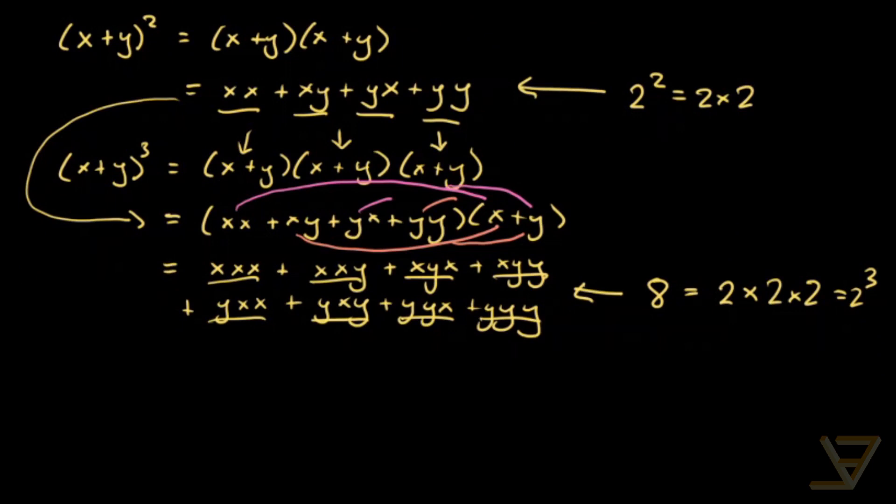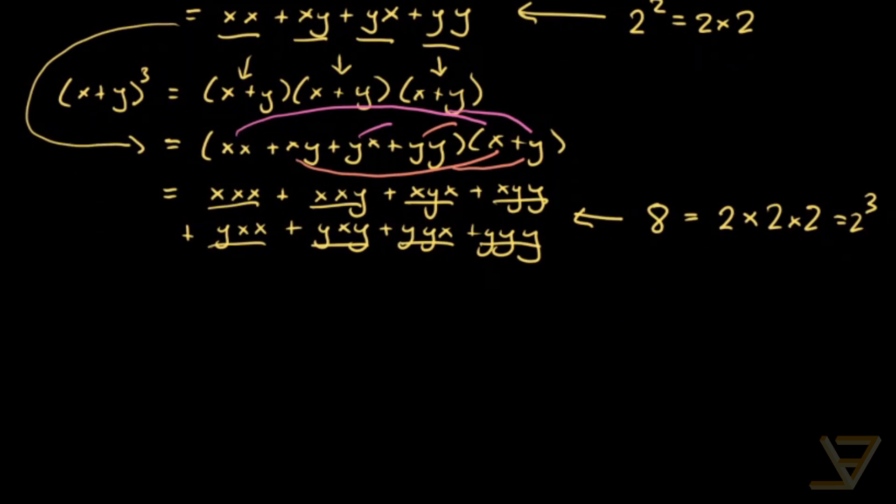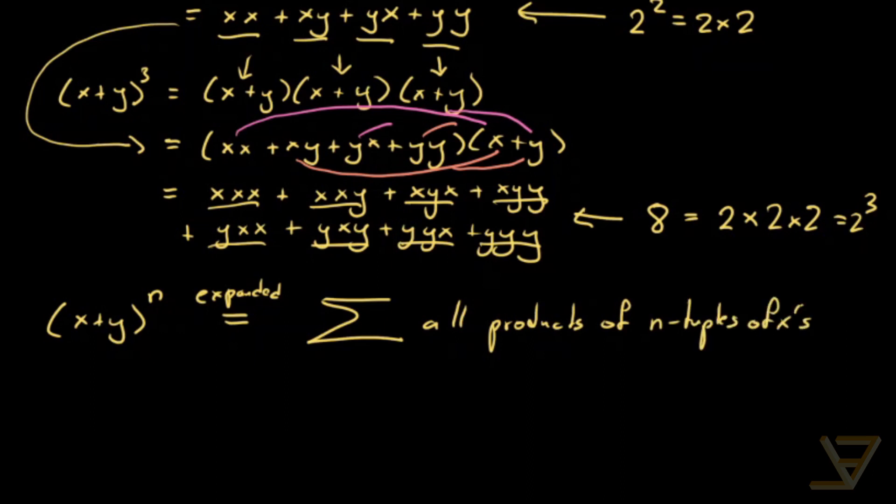I'm not going to do this right now, but you can show in general that x plus y, before collecting like terms, but after expansion, to the power of n equals expanded equals to the sum of all products of n tuples of x's and y's.